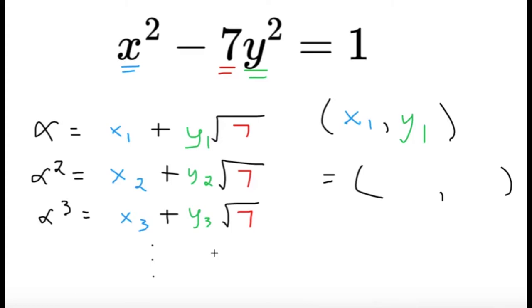Before anything else, we need the smallest solution. And this requires a little bit of trial and error. But a little bit of trial and error would tell us that 8 squared minus 7 times 3 squared, that's 64 minus 7 times 9, that's 63. That is indeed equal to 1. So, we have a basic solution here, 8 comma 3.